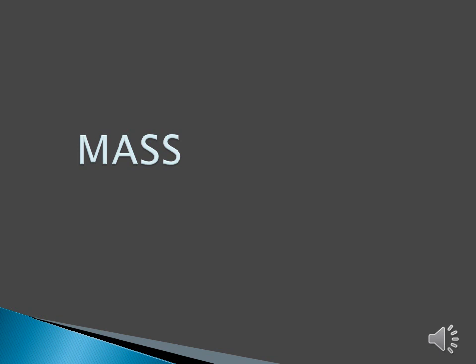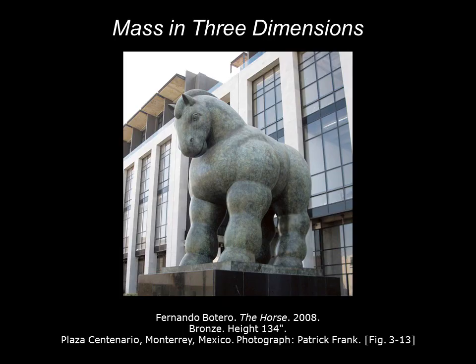The next element is mass. We'll be looking at mass in three dimensions and mass in two dimensions. Shape, our last element, is a two-dimensional area. A three-dimensional area is called a mass, which is the physical bulk of a solid body of material. And when mass encloses space, the space is called volume.